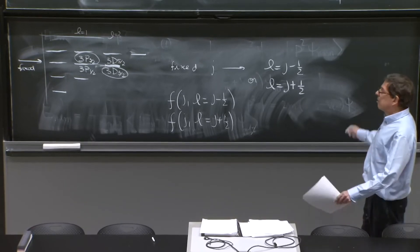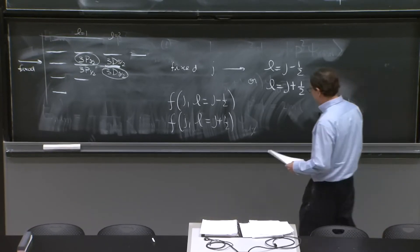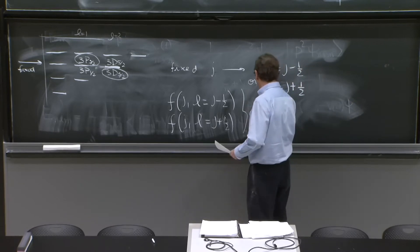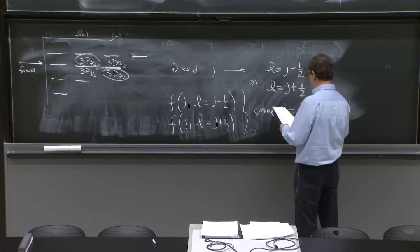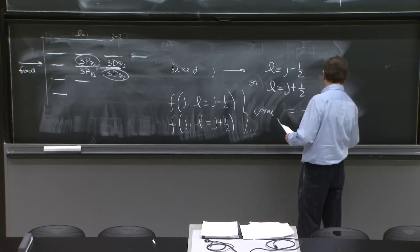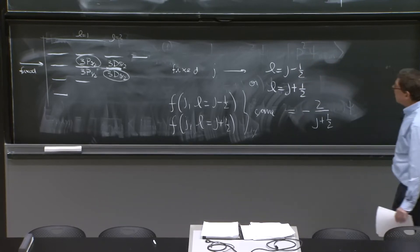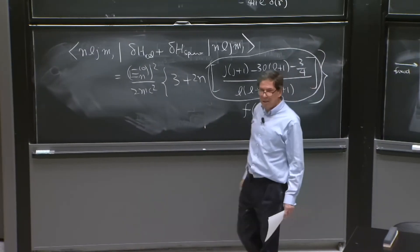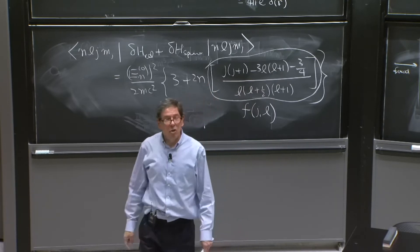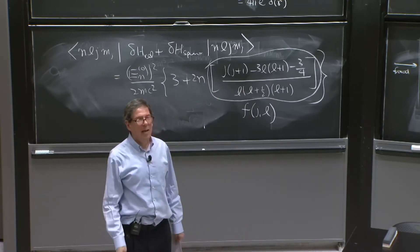You would say, it's going to be a mess. In fact, both cases are the same. And it gives you minus 2 over j plus 1 half. So the whole l dependence here, amazingly, is fake. There's no l dependence in this factor.